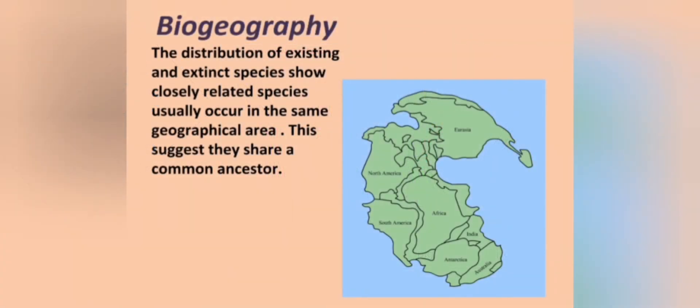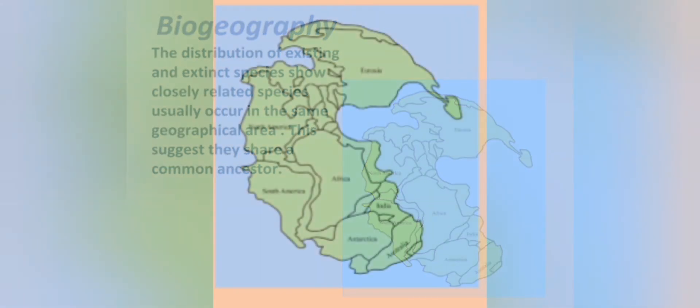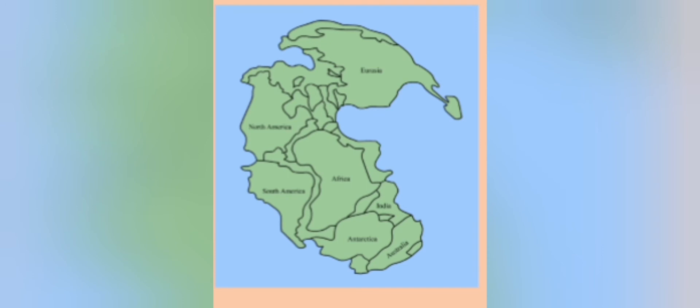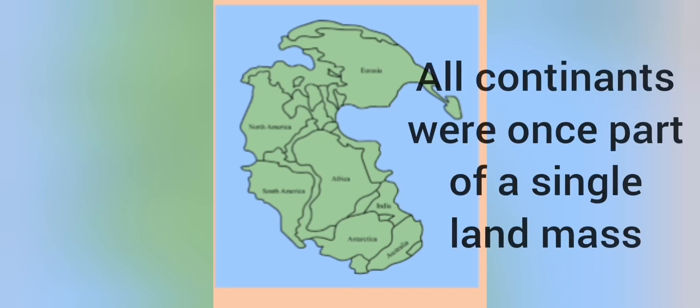Biogeography is the third area used to provide factual evidence for evolution. Biogeography is the study of existing and extinct species to show how closely related species, which usually occur in the same geographical area, suggests they have a common ancestor. If you take an atlas, cut out all the various continents, and paste them together like pieces of a puzzle, you'll notice they kind of fit together — all the continents used to be together forming one huge piece of land called Pangaea.